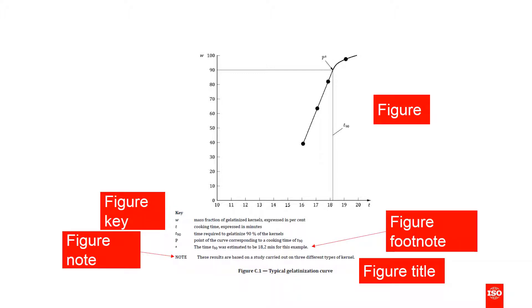Now we'll talk a little bit about notes and footnotes in figures, which follow the same rules as in tables. Notes apply to the whole figure and are not allowed to contain requirements, permissions or recommendations. Footnotes refer to a specific element of the figure, and they can contain requirements, permissions or recommendations for that specific element.